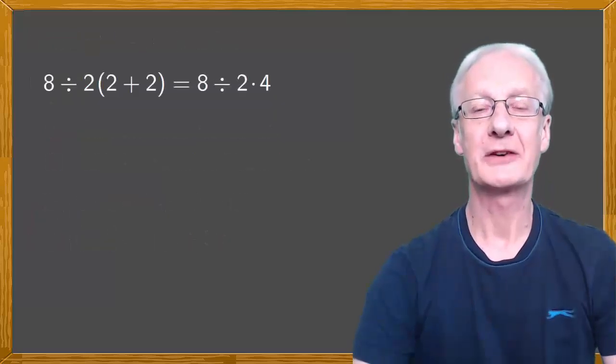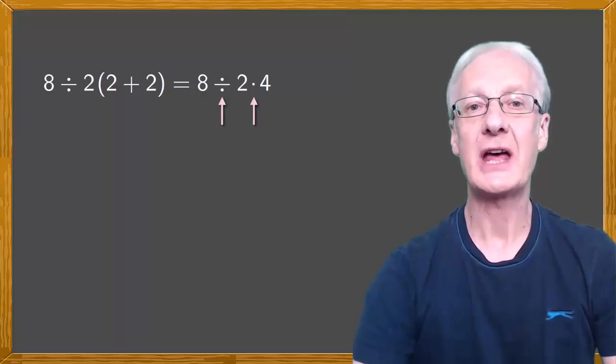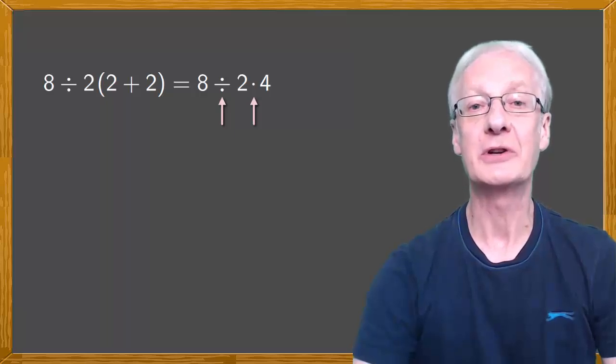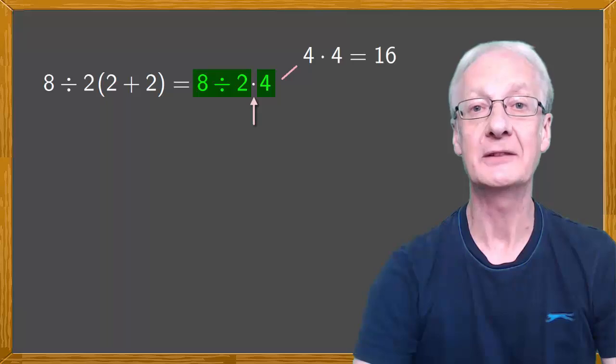Now let's go back to our original problem. We have one division and one multiplication, operations that are at the same level of priority. The problem is we get different results depending on the order in which we do things. Either 16 or 1.